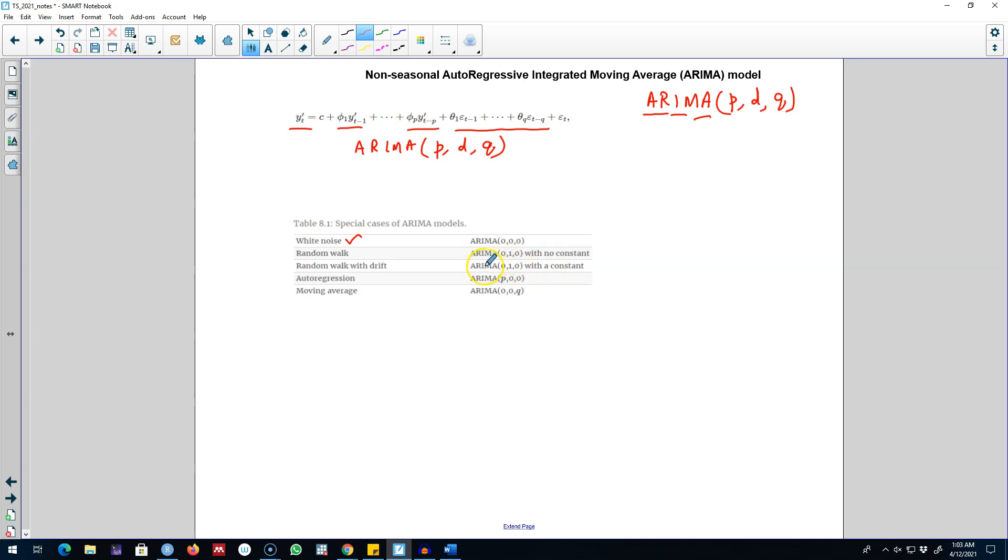Similarly, if we do not include the q part in our model - that is, we only include the p lags of the y_t variable - this type of model is called ARIMA(p,0,0), and you can simply write this model as AR(p).